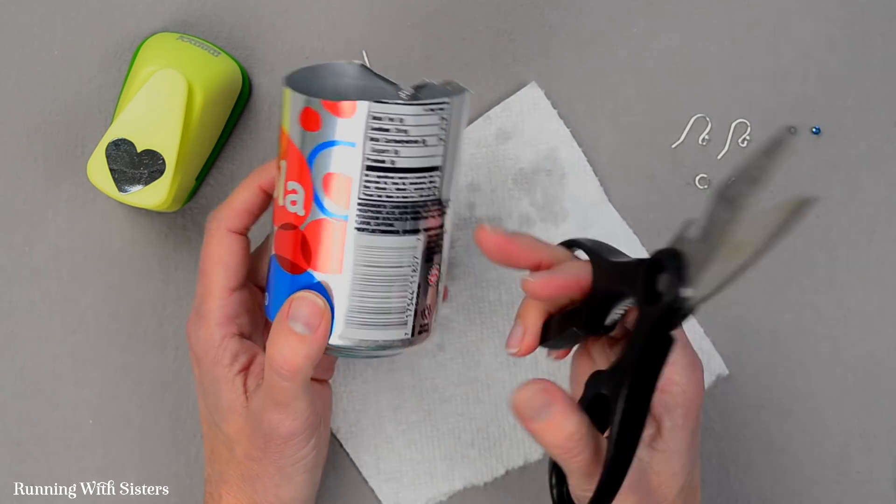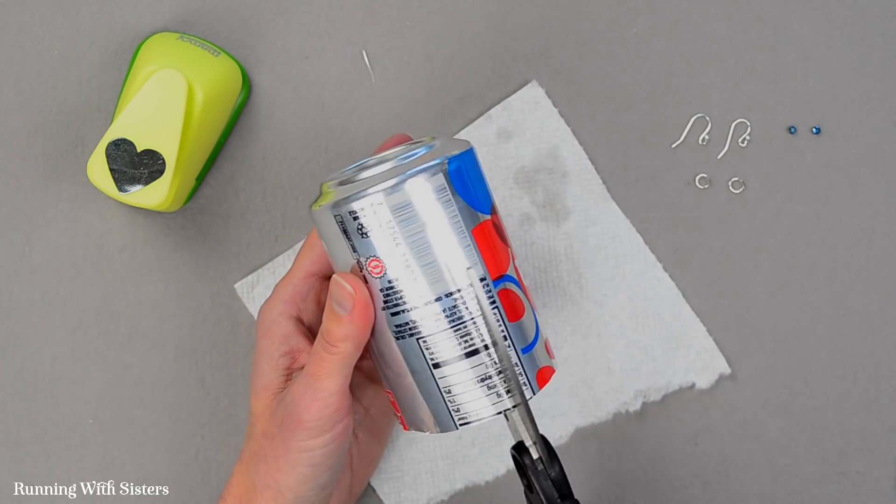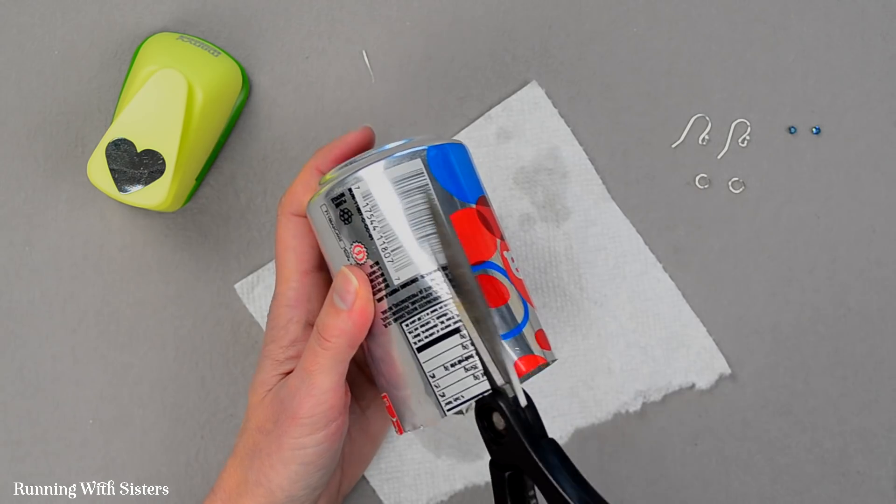And I'm going to continue to cut my can. And at this point what I like to do is look for the part of the can that I know I don't want in my earrings. And I'm going to cut there. I'm going to cut a slit right up the side like that.